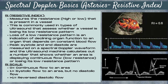Resistive index, known as RI, is a calculation that an ultrasound machine can make, and this measures the resistance — either high or low — that is present in a vessel. This is commonly used in types of ultrasound that assess whether a vessel is losing its low resistance pattern. Loss of a low resistance pattern is an indication of declining organ function to an organ that depends on constant blood flow. For instance, you wouldn't want the internal carotid artery supplying the brain to develop a high resistance pattern, or the blood flow would not be constant to the brain. To measure the resistive index, the peak systolic and the end diastolic areas are measured on the spectral Doppler waveform, and the ultrasound machine calculates a number that shows whether an area is displaying continuous flow or not, and whether it's losing its low resistance pattern and becoming a more high resistance waveform.